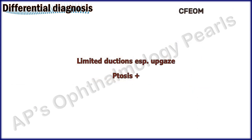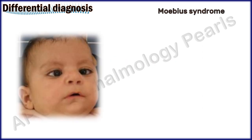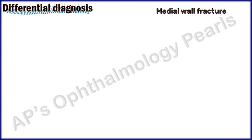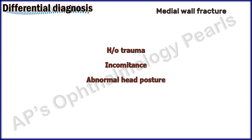In congenital fibrosis of the extraocular muscles, there are poor ductions especially in upgaze and ptosis is very frequently seen. In Mobius syndrome, there is a large angle esotropia with cross fixation that can mimic infantile esotropia; tight medial recti can be discerned on forced duction testing and there will be evidence of unilateral or bilateral facial palsy along with other congenital abnormalities. Medial wall orbital fracture will present with a history of trauma, incomitance, abnormal head posture, and a positive forced duction test.